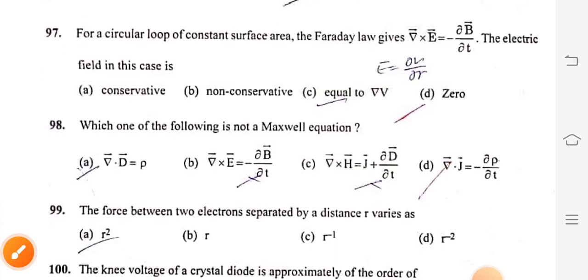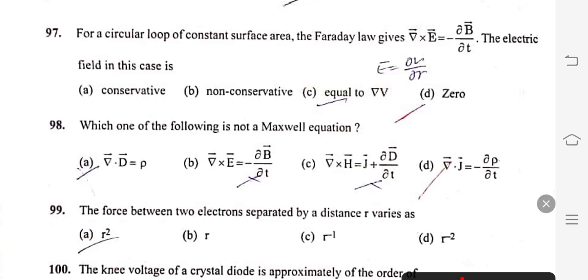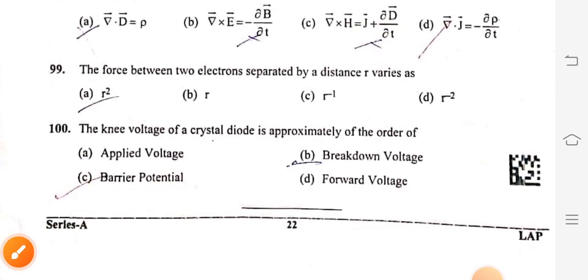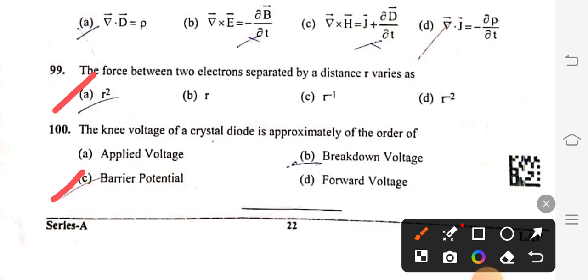Question 97: For a circular loop of constant surface area, the Faraday law gives del cross E vector equals minus derivative of B vector. The electric field in this case is 0, option D. Question 98: Which one of the following is not a Maxwell equation? Right option is del dot J equals minus del rho over del T, option D. Question 99: The force between two electrons separated by distance R varies as R square, option A. Question 100: The knee voltage of a crystal diode is approximately of the order of barrier potential, option C.